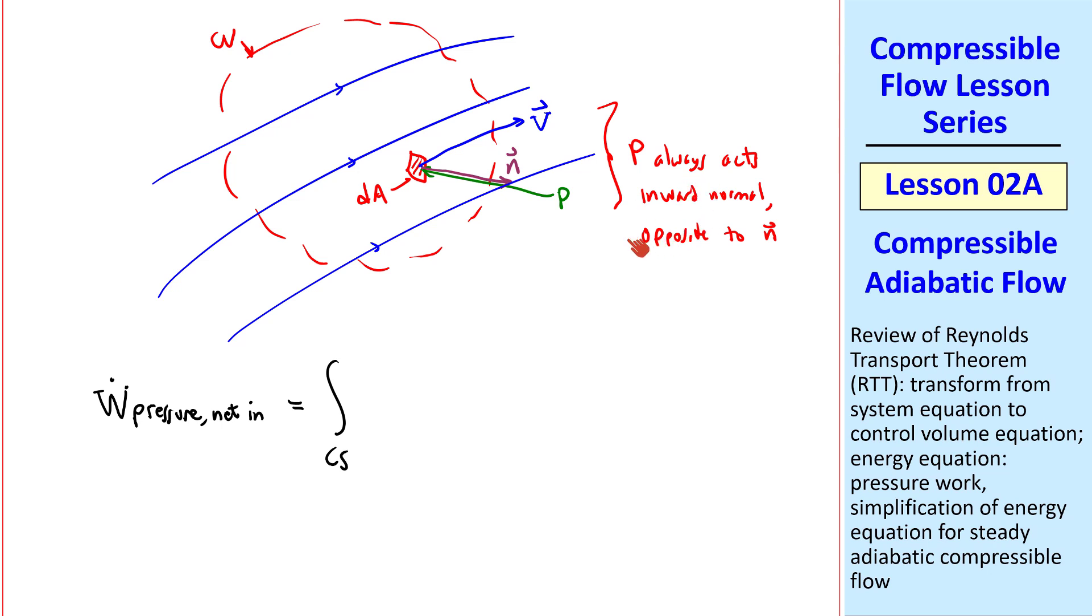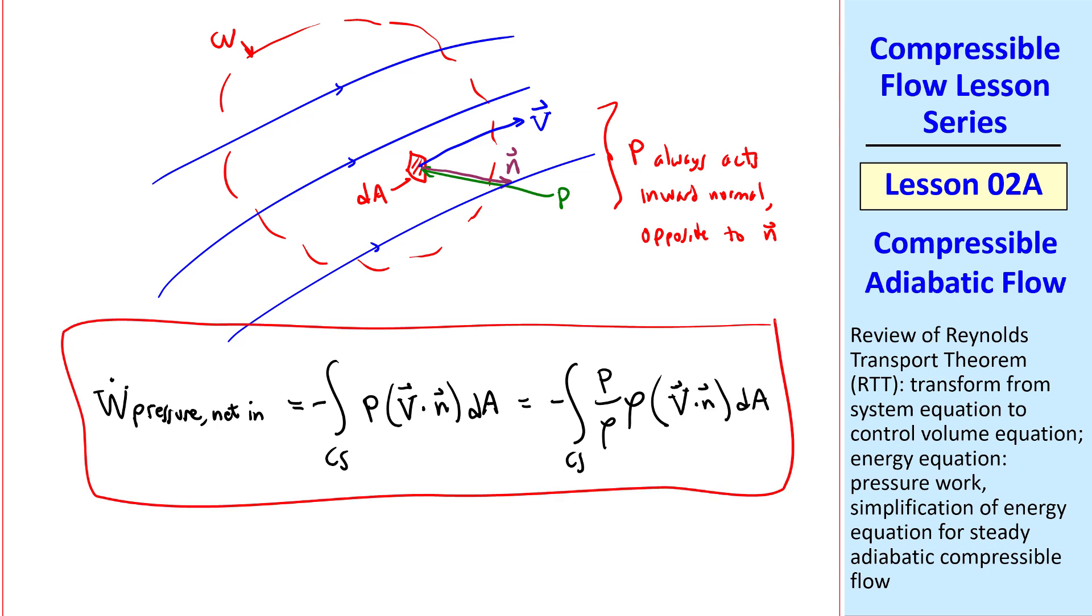Thus, to get W dot pressure net in, we integrate over the entire control surface. Because of this, we get a negative sign, P, and then V dot N dA, which, multiplying and dividing by rho, gives us P over rho, rho, V dot N dA. This is the more general case of the pressure work term, for this arbitrarily shaped but fixed control volume.